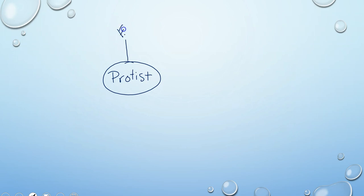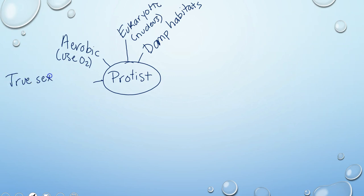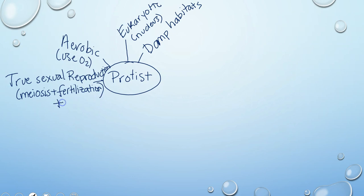One thing all protists have in common is that they are eukaryotic, meaning that they have a nucleus. Another thing they all have in common is that they live in damp habitats, which we will discuss in a future video. They are also aerobic, meaning they use oxygen. They are capable of true sexual reproduction, meaning they can perform both meiosis and fertilization, and they are also capable of asexual reproduction.